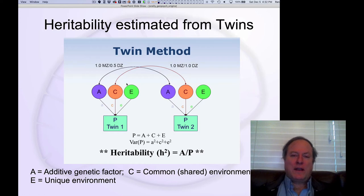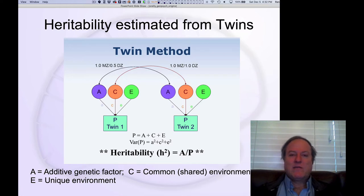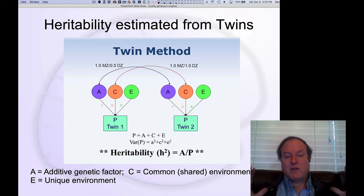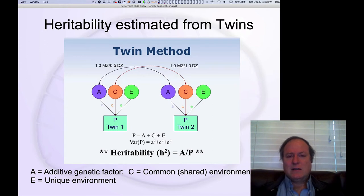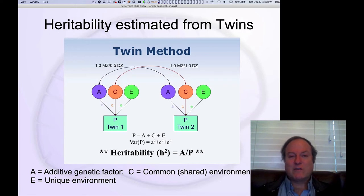Now we're going to start looking at how we actually use genetic information in the context of psychology to understand this critical question: what is the genetic basis for human characteristics — our IQ, personality variables, all these kinds of things we've been thinking about. We have this overarching question of how much of our individual characteristics is determined by our genes versus the environment — this classic question of nature versus nurture.